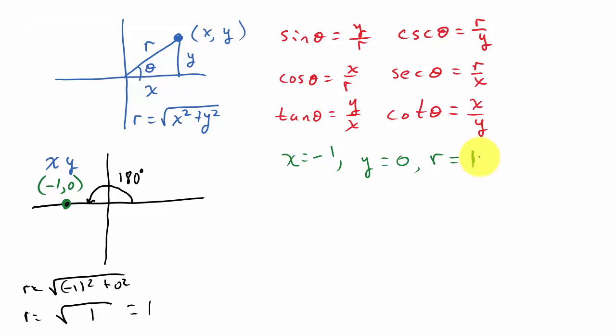So now let's find all the trig values for 180 degrees. So I've got the sine of 180. Well, what's the sine? y over r. y over r. So that's 0 over 1, which is 0. There's sine 180. Cosine 180. Well, cosine is what? x over r. There's x. There's r. So that's negative 1 over 1, which is negative 1. And then tangent 180. Well, tangent is what? y over x. y over x. So that's 0 over negative 1, which is 0.